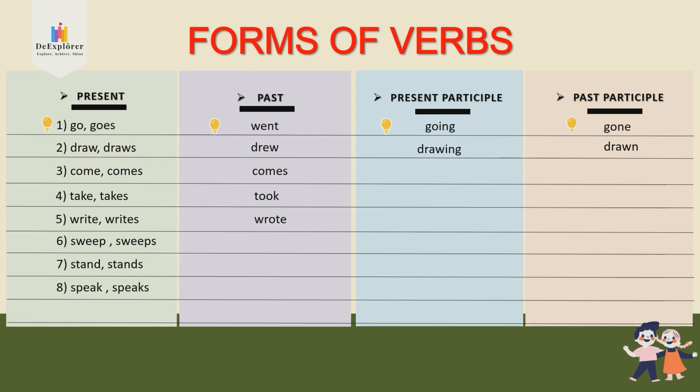Number seven: stand. Number eight: speak, speaks. Number nine: know, knows. So altogether there are nine verbs. I want you to write the past tense verb, the present participle where you add -ing, and the last one is the past participle. If you've forgotten the past participle, take a look at your workbook — you can find the answers there.